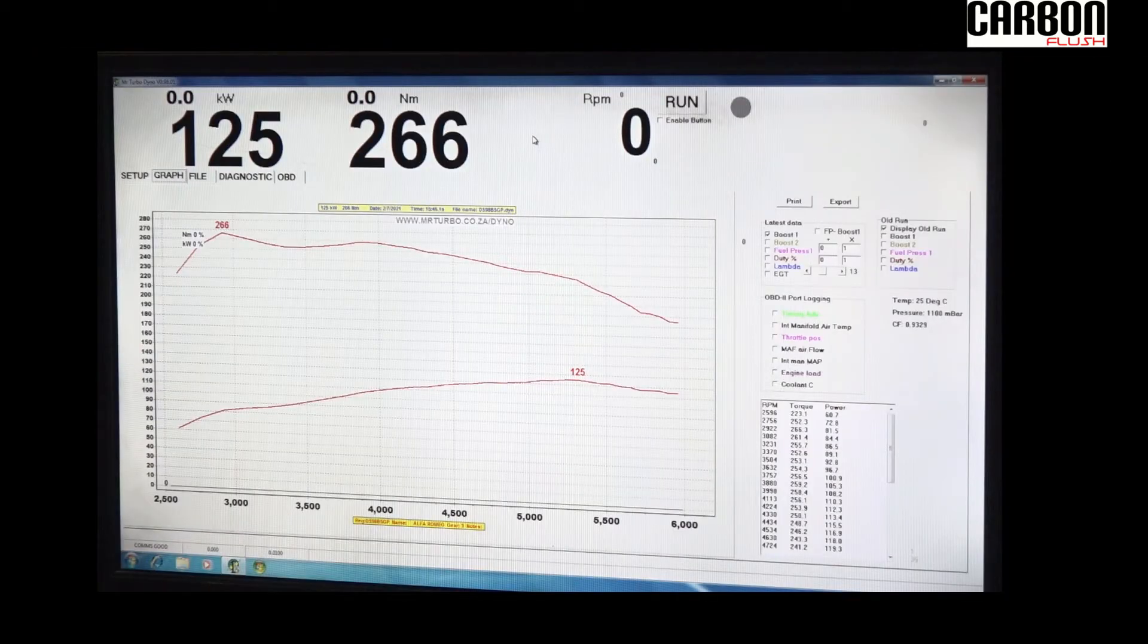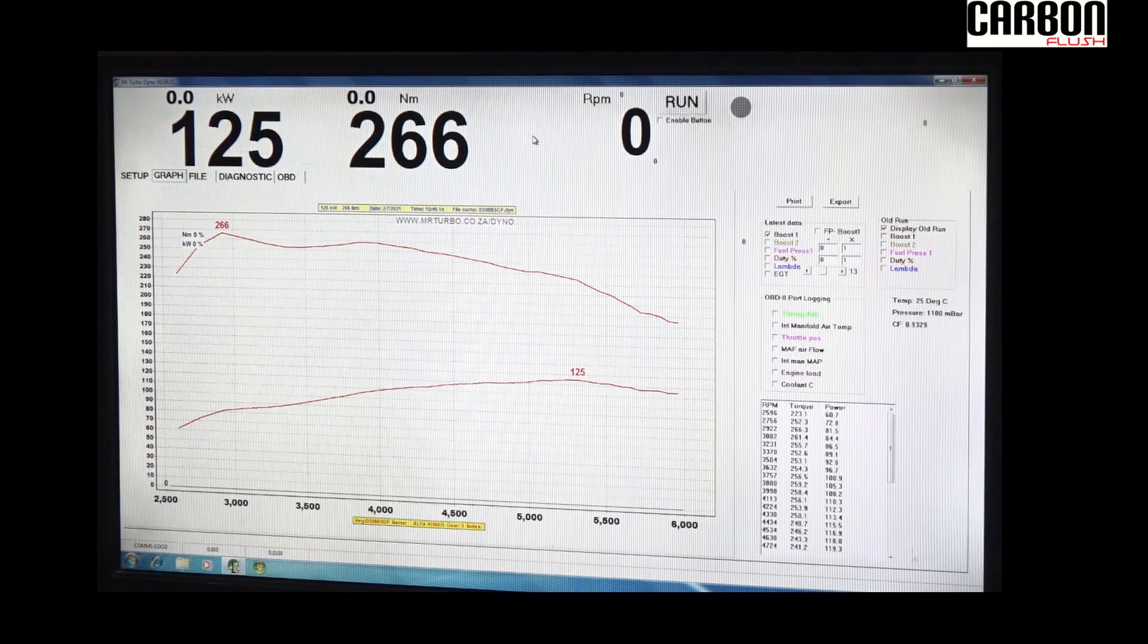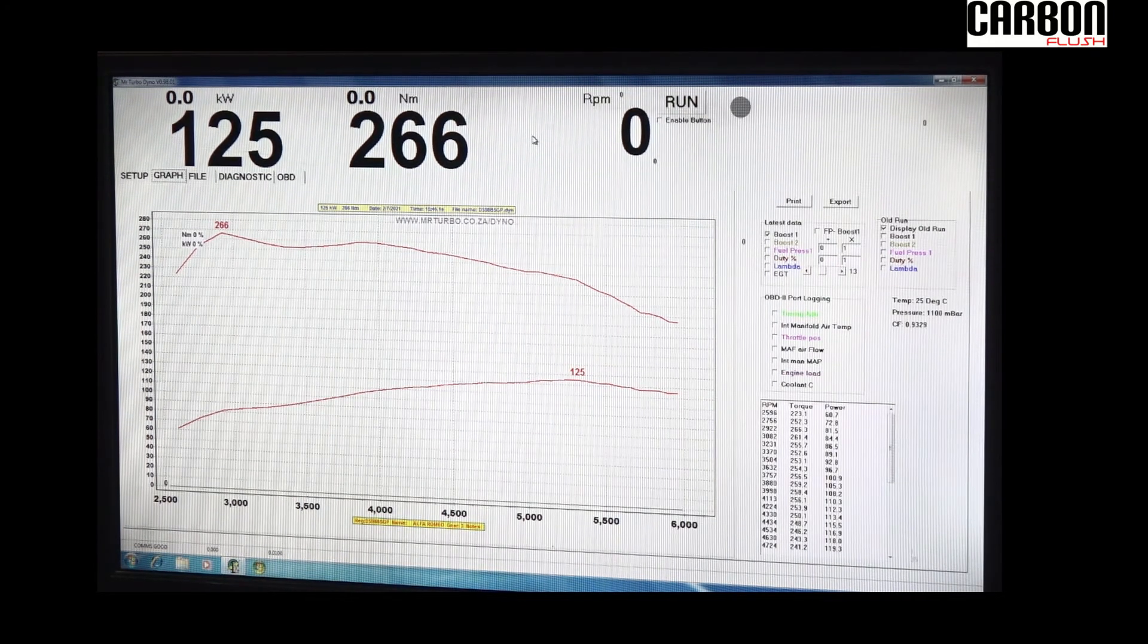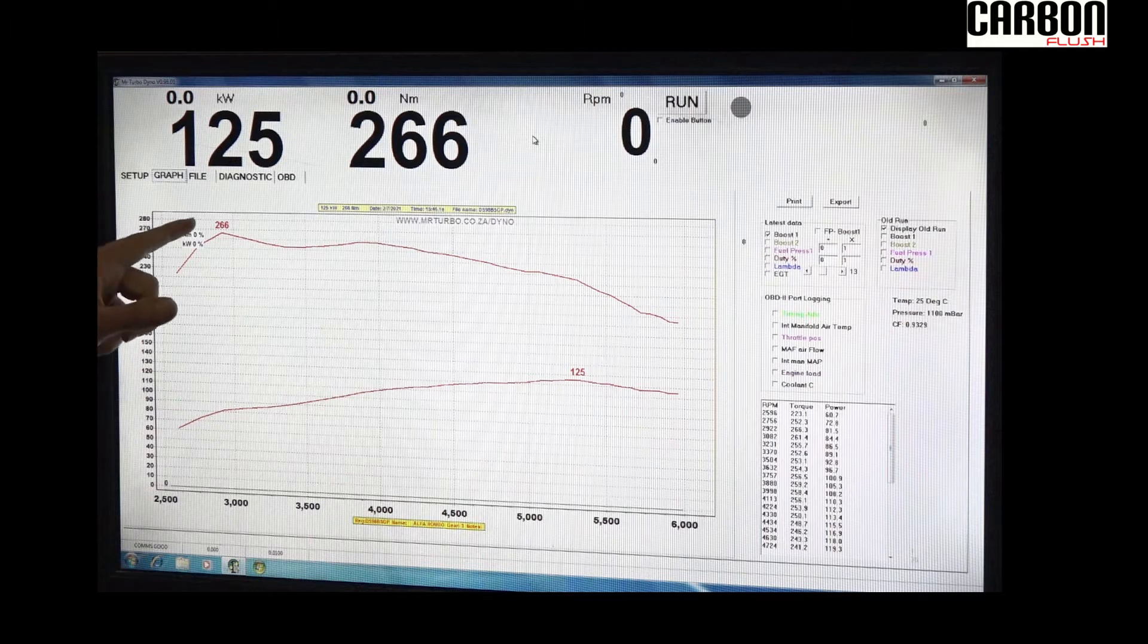This is the initial dyno run of the Alfa Romeo Giulietta 1.4 Multi Air. The initial wheel figures was 125 kilowatts and 266 newton meters below 3000 RPM. I consider that as just a boost spike because you can see it's pulling back. The max there you're looking at about 258 newton meters.